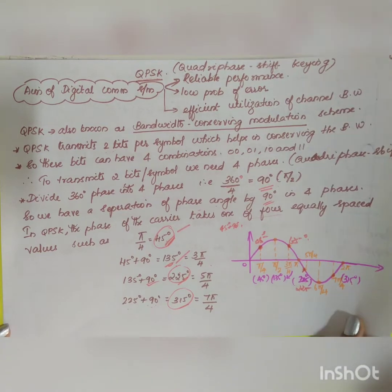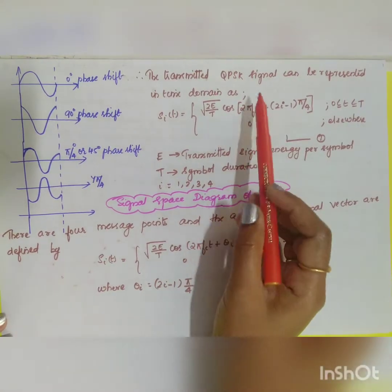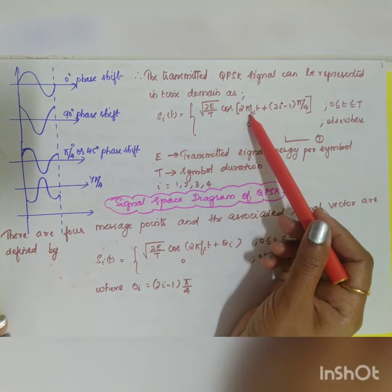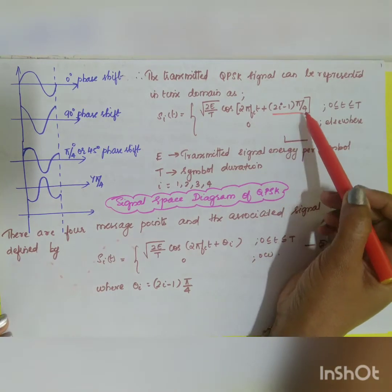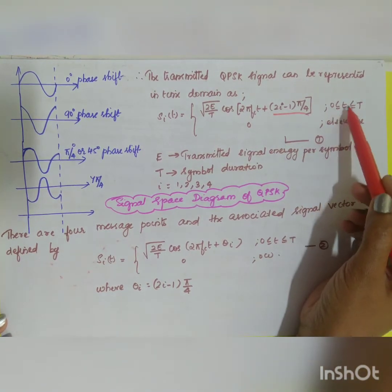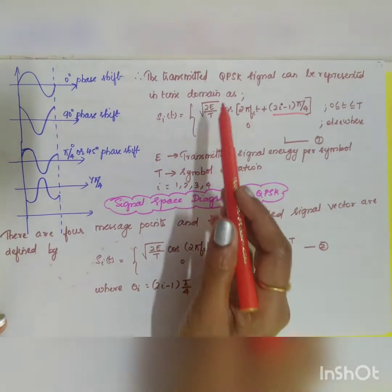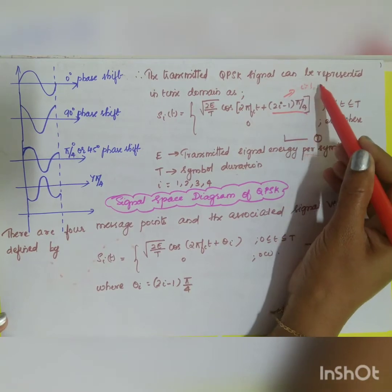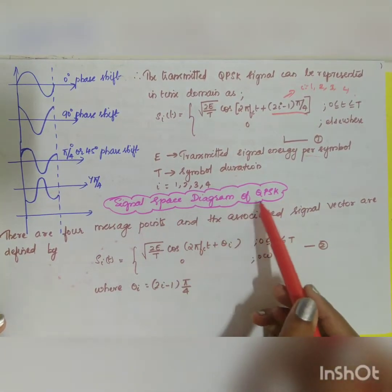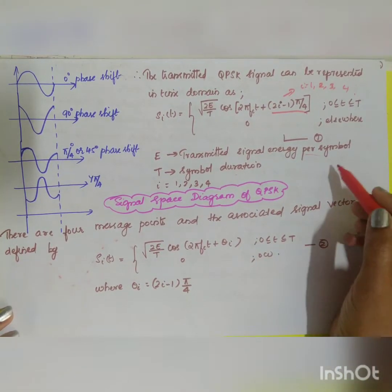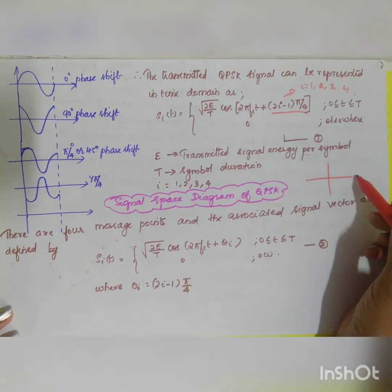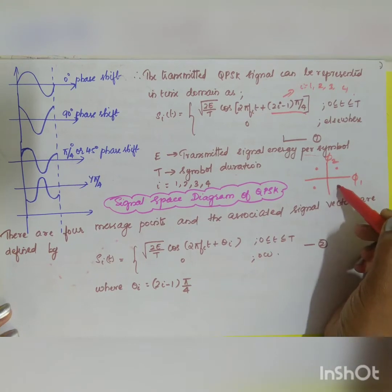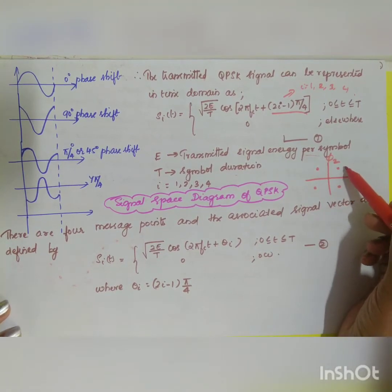In general, the transmitted QPSK signal is represented in the time domain as: s_i(t) = sqrt(2E/T) · cos(2πf_c·t + θ_i), where θ_i = (2i−1)·π/4, for time duration 0 to T and 0 elsewhere. Here E is the transmitted signal energy per bit, T is the symbol duration, and i = 1, 2, 3, 4. Using the orthonormal basis functions from the signal space diagram, there are four different points.